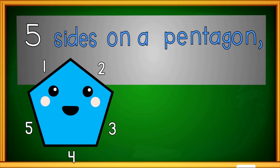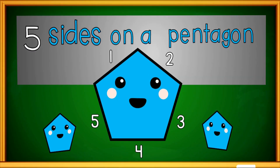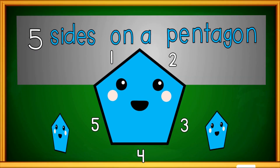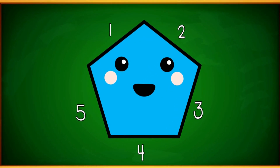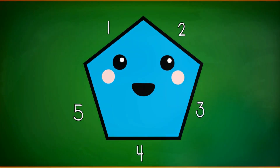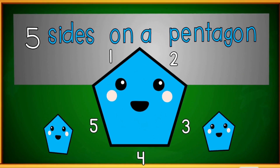There are five sides on a pentagon, five sides on a pentagon. One, two, three, four, five — five sides on a pentagon.